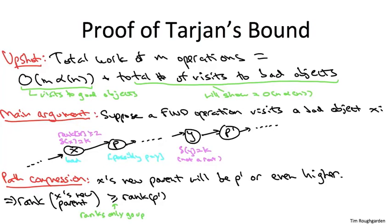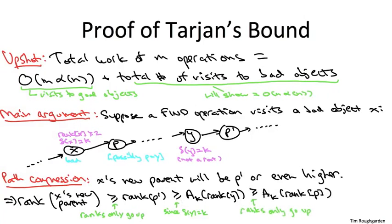How does the rank of P' compare to that of its child Y? Here's a key point: because delta(Y) equals K, remember what the definition of delta is — it quantifies the gap between the rank of an object and that of its parent. Using that for Y and its parent P', it means the rank of P' is at least the function A_K applied to Y's rank. Our third inequality: it could be the case that Y actually is the same as P — actually X's old parent. In that case, the rank of X's old parent is precisely the rank of Y. Otherwise, Y is even higher up than X's old parent P, and therefore by the monotonicity of rank, the rank of Y is even bigger than the rank of X's old parent.